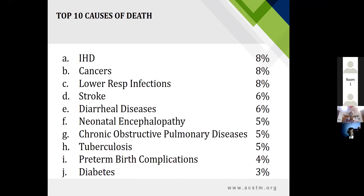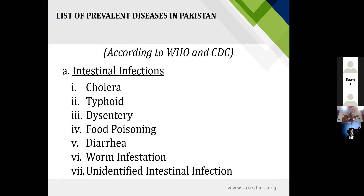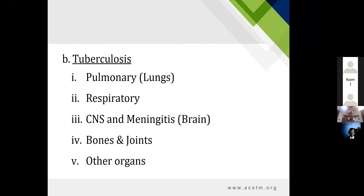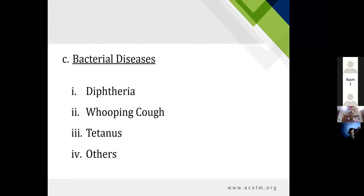In context of diseases we need to address, according to the WHO and CDC, prevalent diseases in Pakistan include intestinal infections — commonly cholera, typhoid, dysentery, food poisoning, diarrhea, worm infestations, and unidentified intestinal infections. In tuberculosis, mainly pulmonary tuberculosis is prevalent, but also respiratory, central nervous system and meningitis, bone and joint tuberculosis, and other organ involvement.